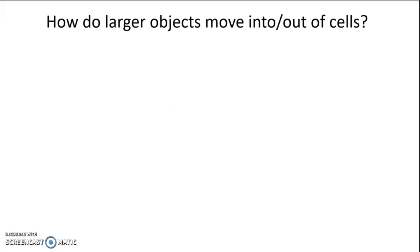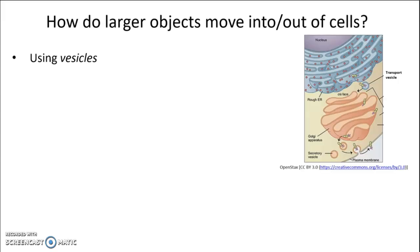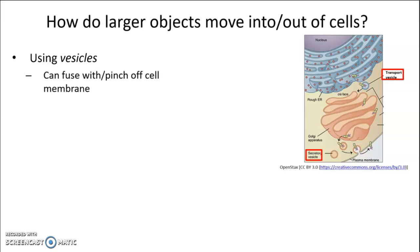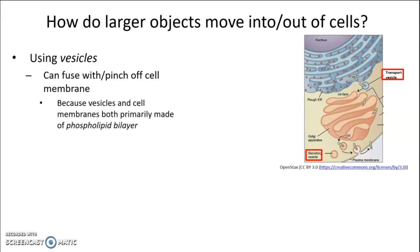When cells need to move large objects into or out of the cell, they will use vesicles. We've seen vesicles already when learning about how proteins are produced and transported out of the cell — vesicles that pinch off the rough endoplasmic reticulum and move to the Golgi, and vesicles that leave the Golgi and fuse with the cell membrane. You already know that vesicles can fuse with or pinch off of other membranes in the cell.